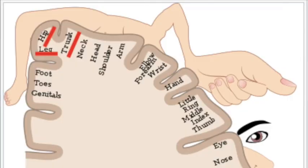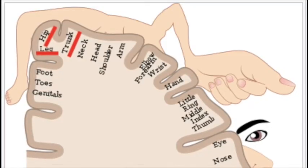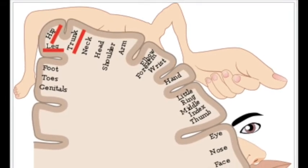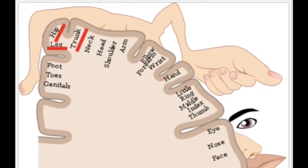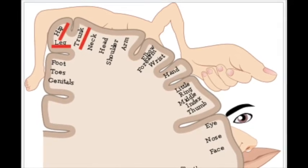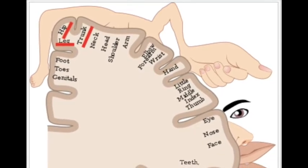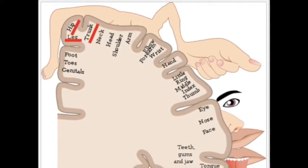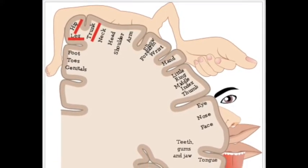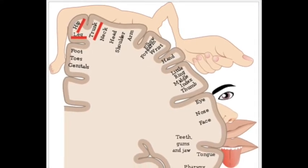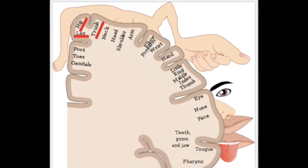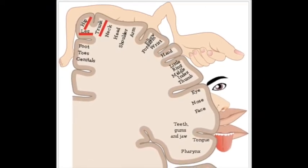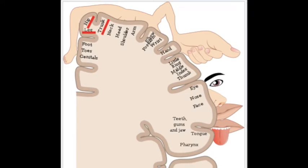Look at this homunculus — a representative map of the resources of just one part of the central nervous system — and see how little of the cerebral cortex is allocated to movement of the trunk, hip, and knee. The entire brain and spinal cord prioritize the movements most used by humans, such as tongue and facial movements and those of the hands and arms, and afford minimal neuronal connections for trunk movement.